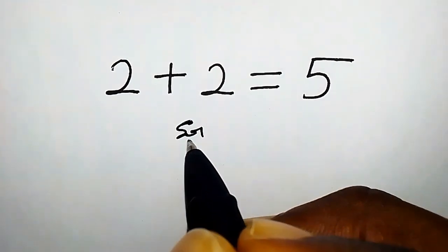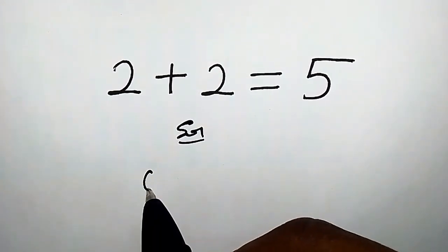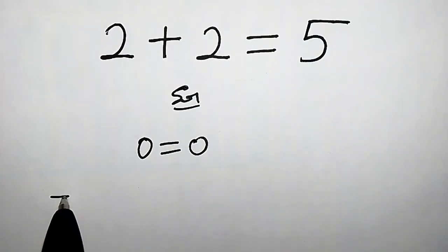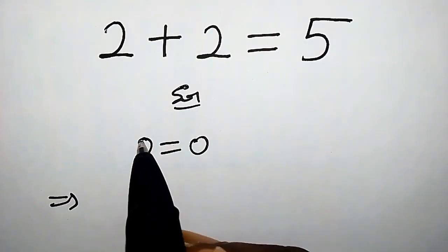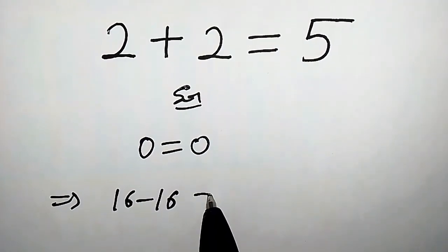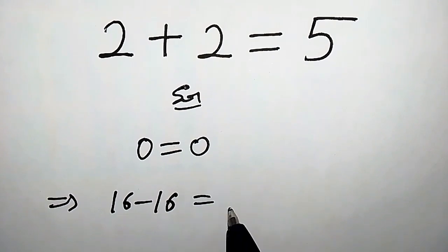Here is the solution. Let's first assume that 0 is equals to 0, which is very obvious. This implies that we can write this left hand side as 16 minus 16, equals likewise the right hand side as 20 minus 20.